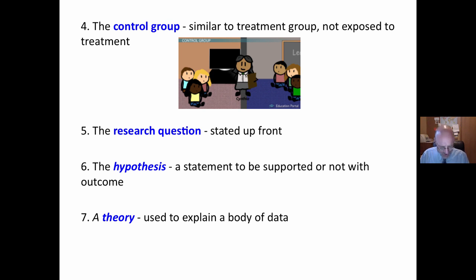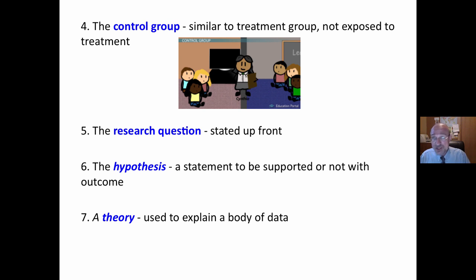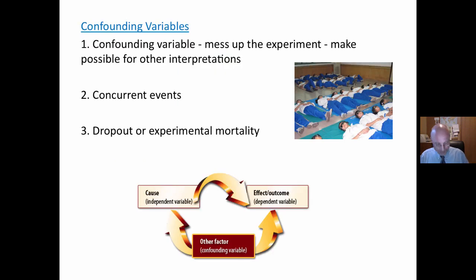A hypothesis is an untested conjecture, a statement to be supported or not with the outcome of the experiment. A theory is used to explain a body of data — an interrelated set of concepts used to explain a set of data, a dot-to-dot picture based on data. For example, we have learning theories. Different learning theories explain learning differently: behavioral learning theory, cognitive learning theory, humanistic learning theory. Different theories explain the same thing differently. All theories are a little bit right and a little bit wrong.